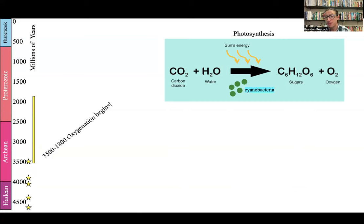Some organisms — and we know which organisms — cyanobacteria, a kind of bacterium, evolved the ability to photosynthesize. They can get photons from the sun and combine water and carbon dioxide to run cellular machinery and create sugars. They can feed themselves based off of sunlight.